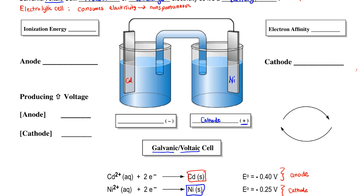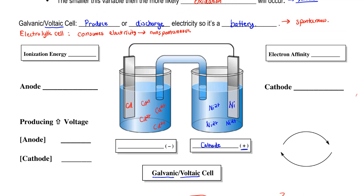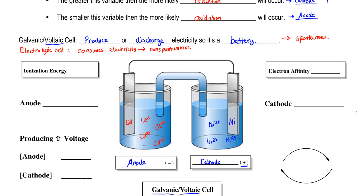Based on these two half reactions, the nickel has Ni²⁺ ions floating around in solution, and the cadmium has Cd²⁺ ions floating around in solution. Oxidation means we're losing electrons, so electrons start to leave the anode and head towards the cathode electrode, producing electricity. We have a voltmeter here which measures how much voltage is being produced.